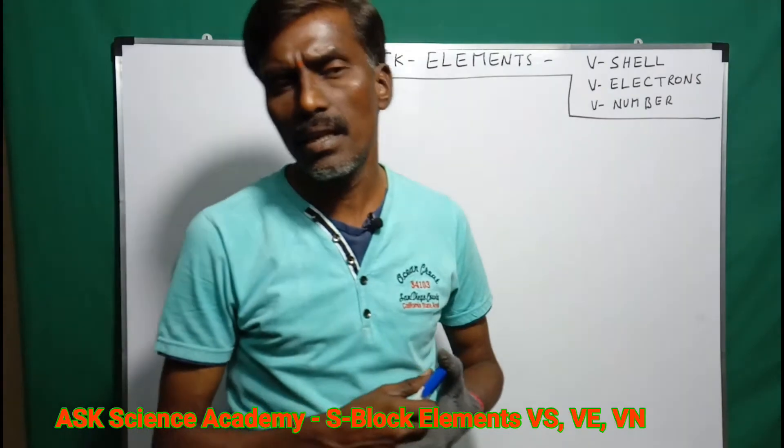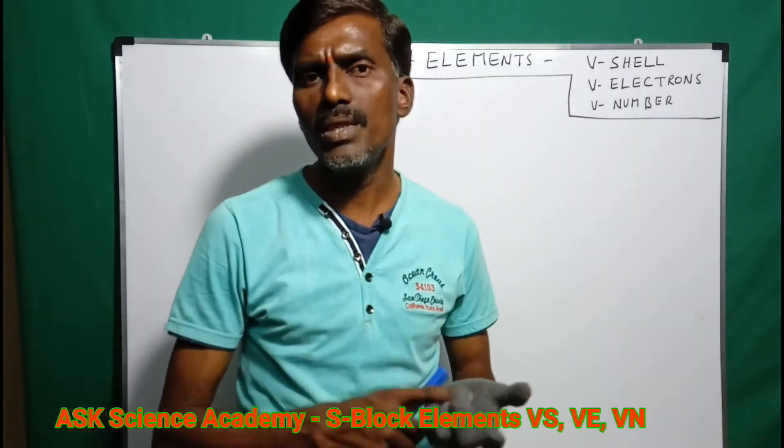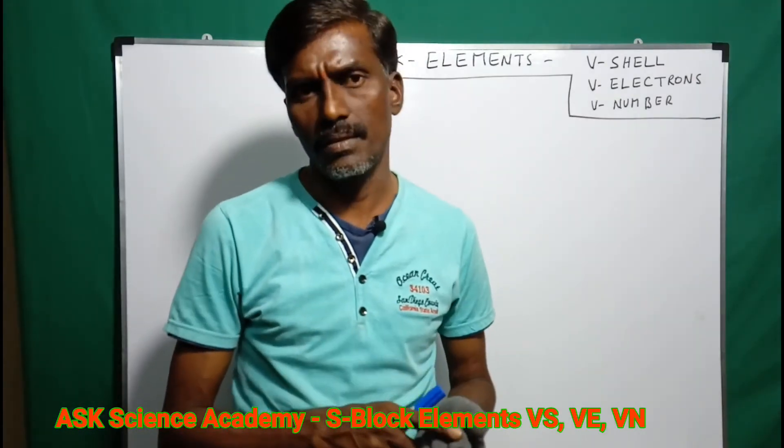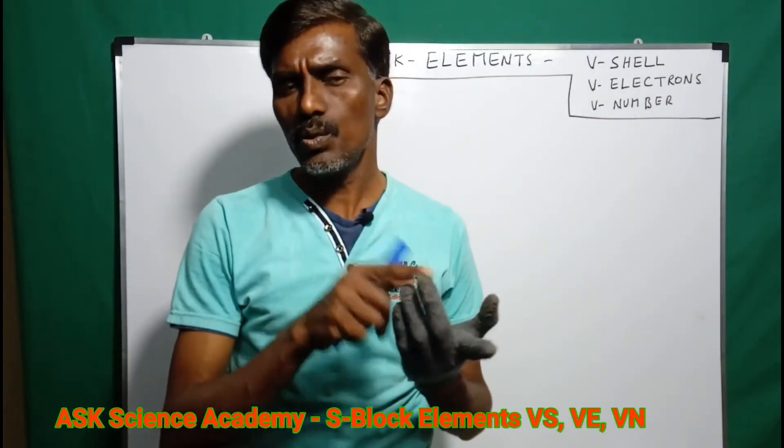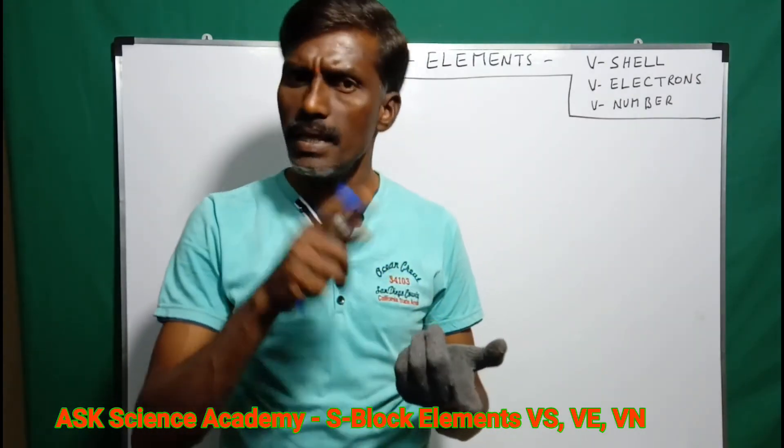For example, neon's configuration is 1s2 2s2 2p6. The final electron here is in the p-orbital.